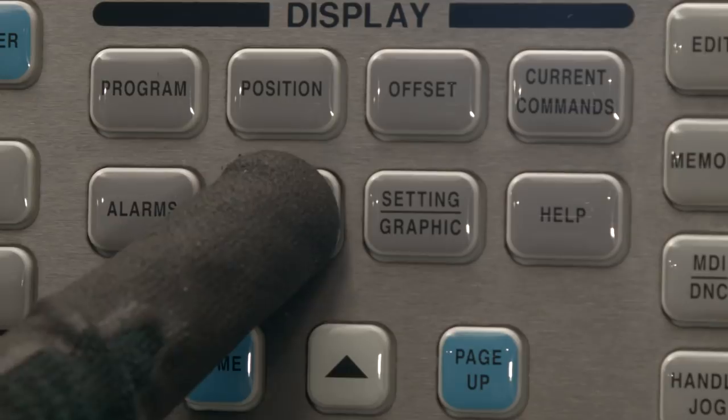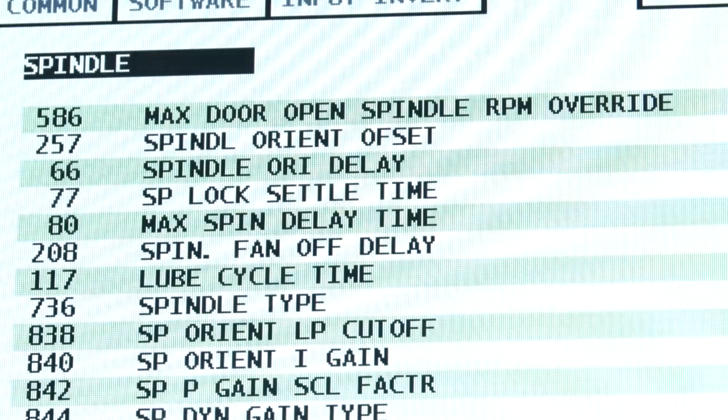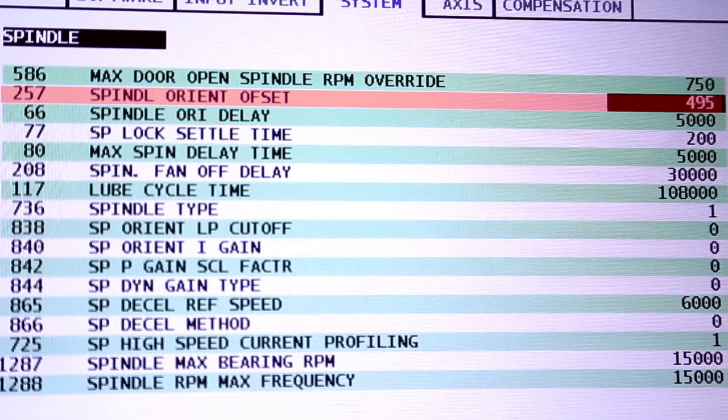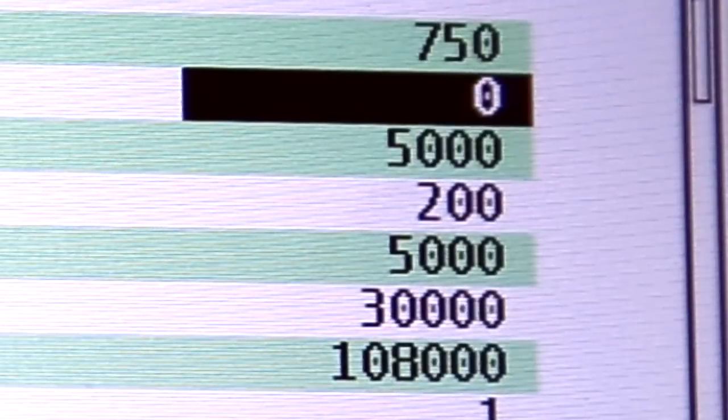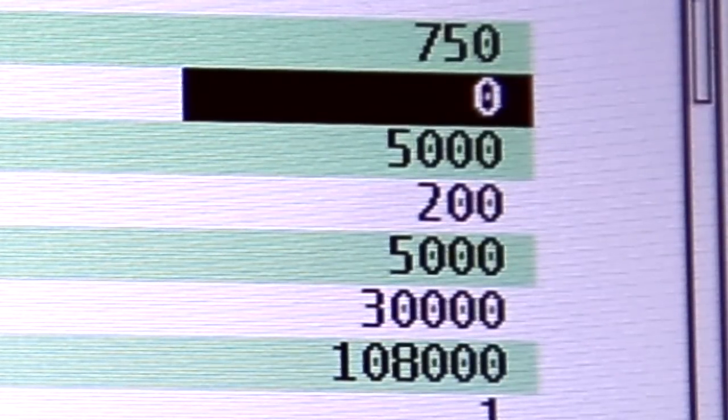Press parameter diagnostics and go to parameter files. Type 257 in the down cursor. This will take you directly to the parameter orientation file. We can no longer use this value so change it to zero by typing zero and then enter.